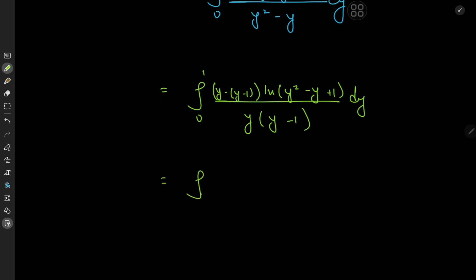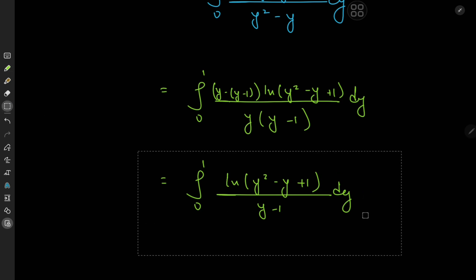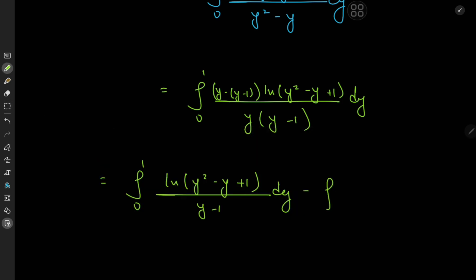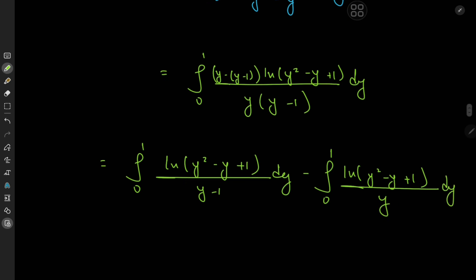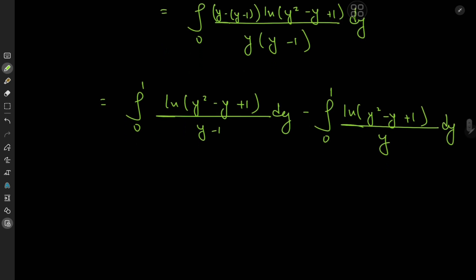So expanding the numerator and using the linearity of the integration operator, we have the integral from 0 to 1 of log y squared minus y plus 1 divided by y minus 1, dy — where the y cancels out — and then minus the integral from 0 to 1 of log y squared minus y plus 1 divided by y, dy — where the y minus 1 cancels out. We have the same numerator, just a slightly different denominator, with limits of integration both 0 and 1.